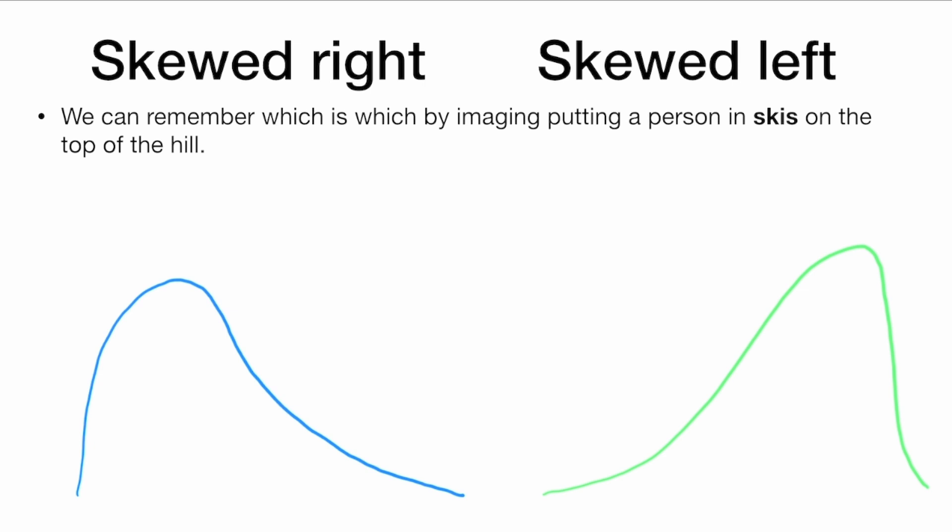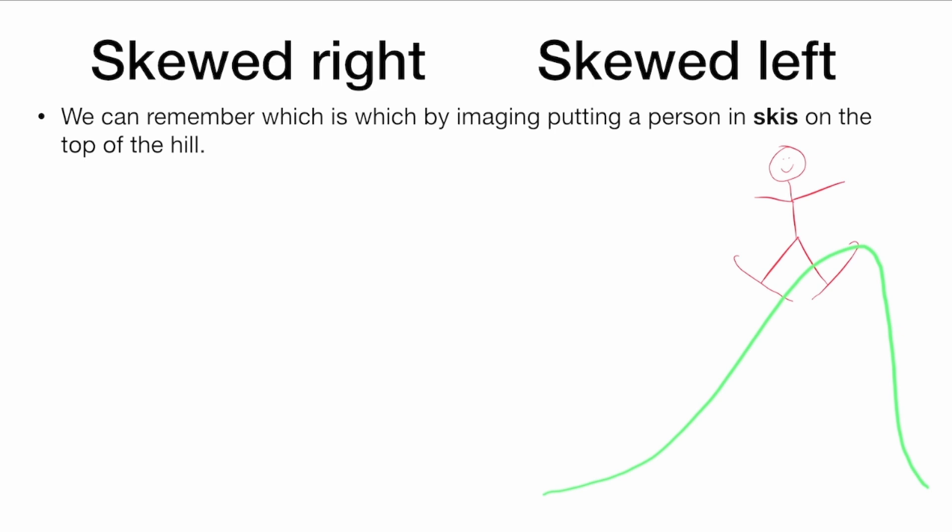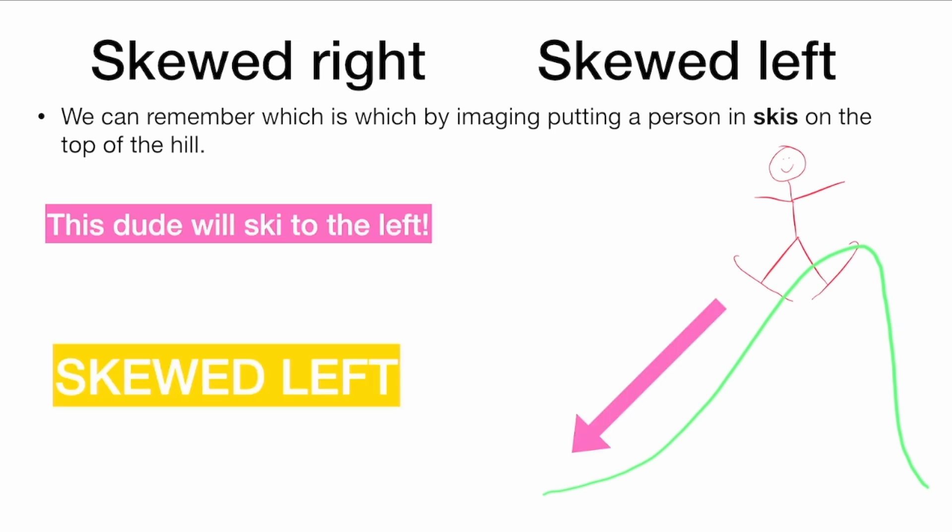We can remember which one is which by imagining putting a person in skis on top of the hill. And this is funny because ski sounds like skew. So we put a person with skis on the top of the hill, and this dude will ski to the right. This distribution is skewed right. And here we put a person on top of the hill and they will ski to the left. This distribution is skewed left.